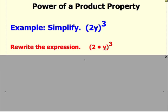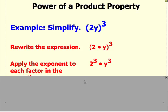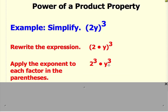What this property basically says is you will take the exponent of 3 and apply it to every single factor within the parentheses. So right now, we're going to have 2 cubed times y cubed.